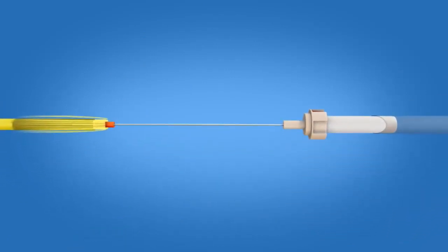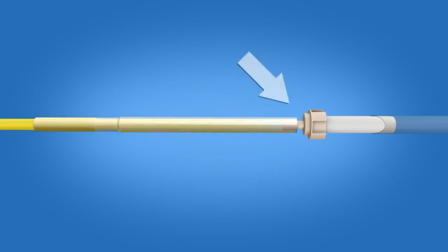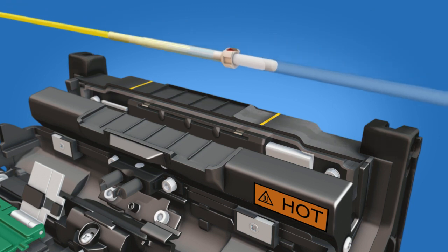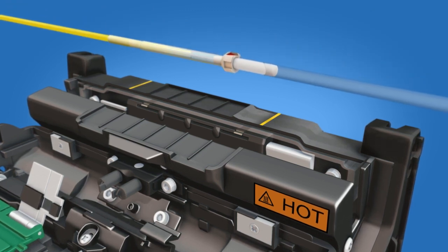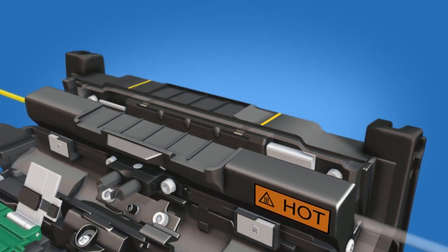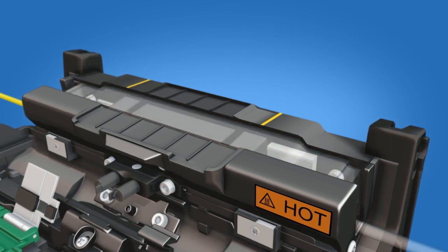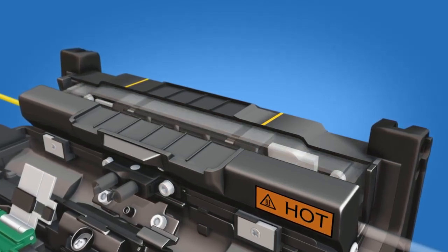Slide the protective sleeve over the splice so that it is flush with the ferrule unit. Position the sleeve in the center of the heater while continuing to maintain contact with the ferrule. Heat the protective sleeve. Allow the sleeve to cool before removing it from the heater.